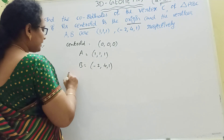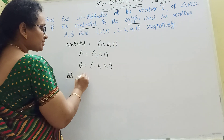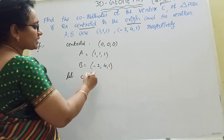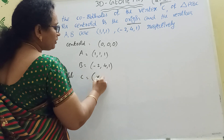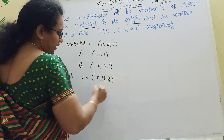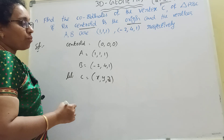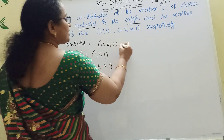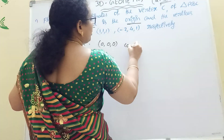Okay? Then let C point - you don't know C point, right? That's why you should take C as (x, y, z). Okay. Now what is the formula of centroid? Centroid formula.